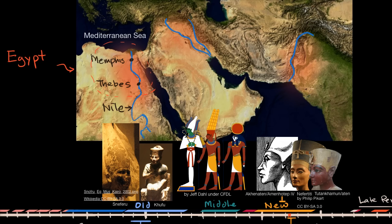The Nile is the longest river. Its tributaries start even south of this picture, and the water flows northward, eventually reaching the Mediterranean Sea via its delta. The delta — where a river opens into the sea — is called a delta because these rivers branch out into an upside-down triangular region, which looks like an upside-down Greek letter delta. That's why a river delta is called that.